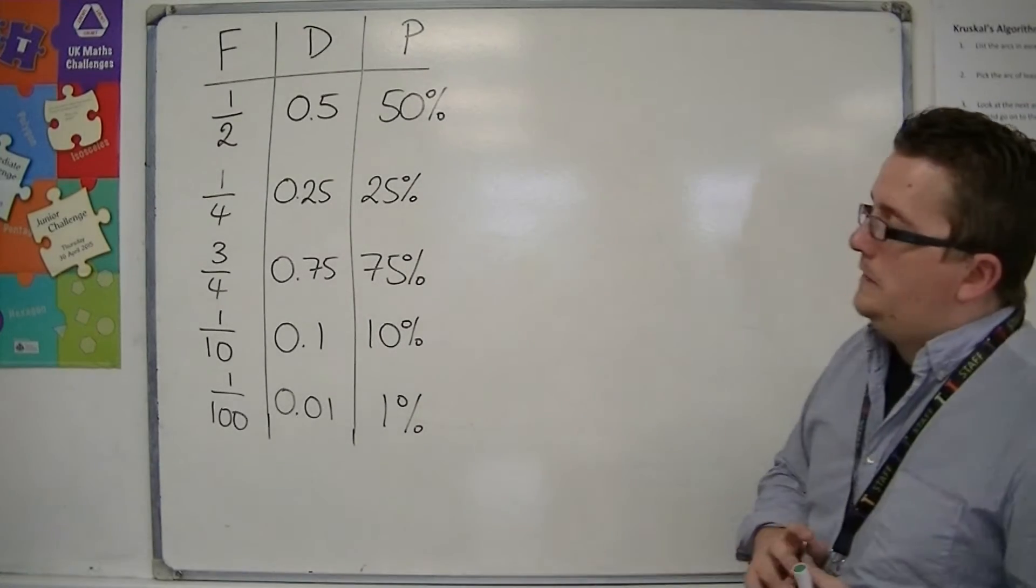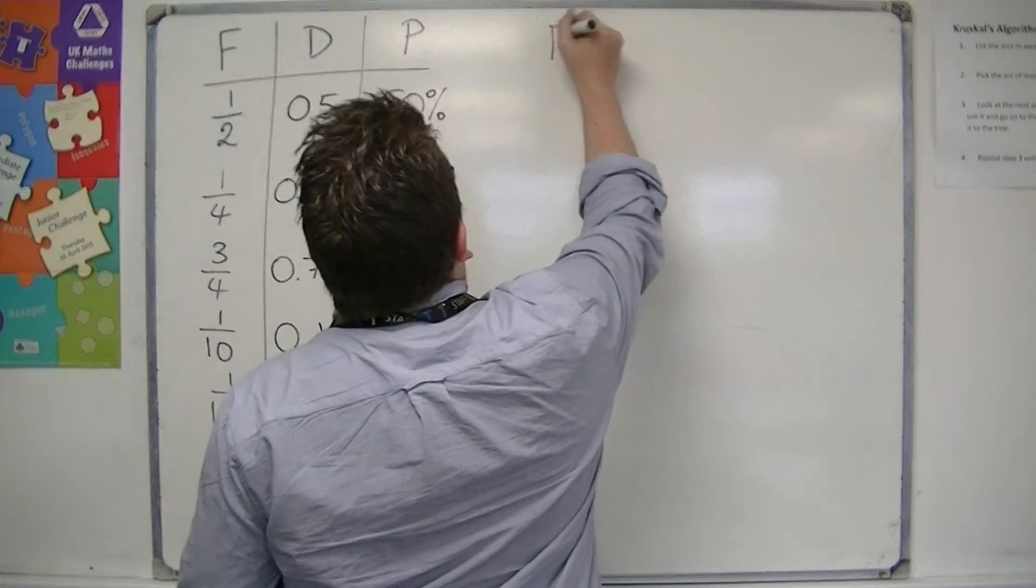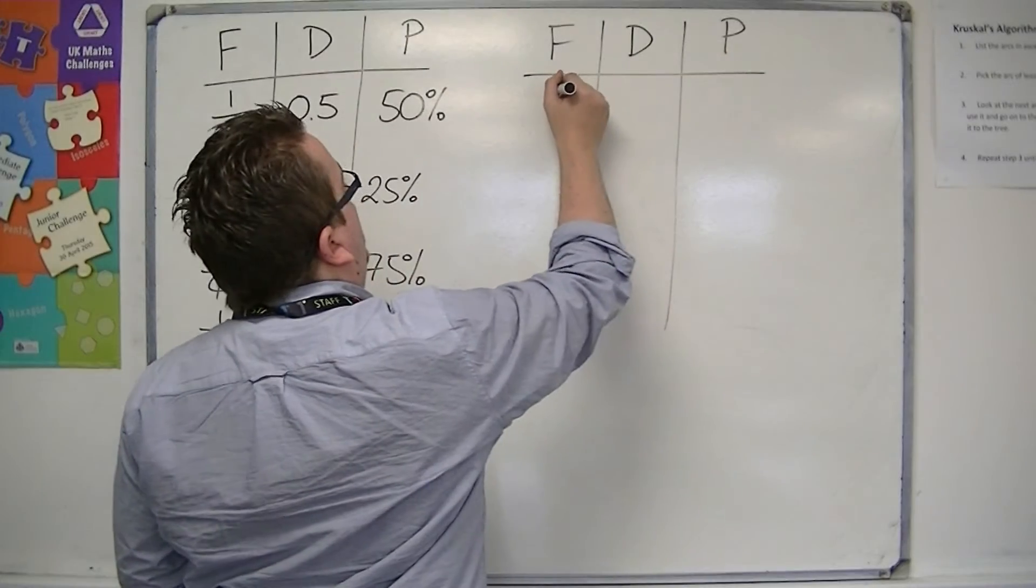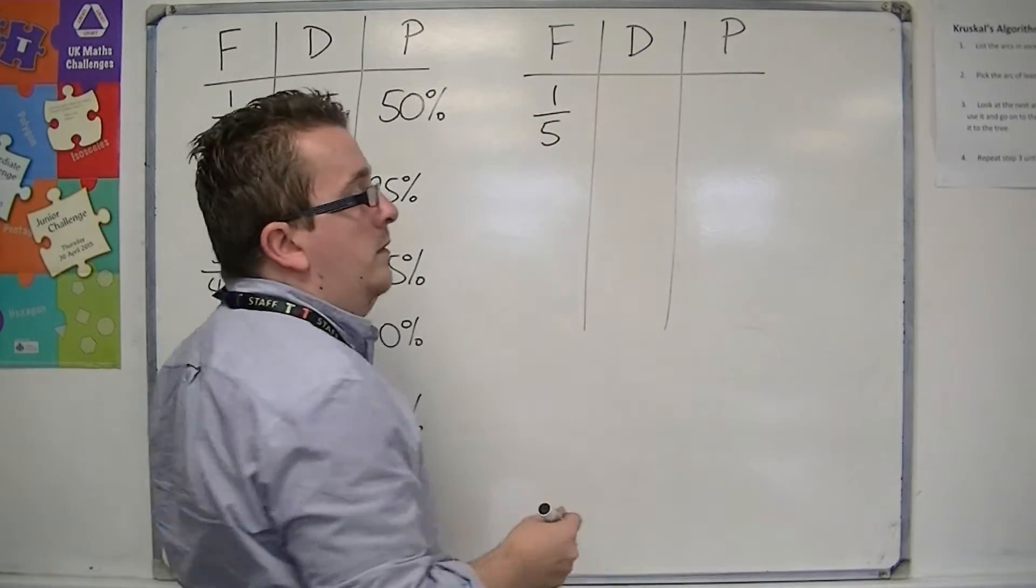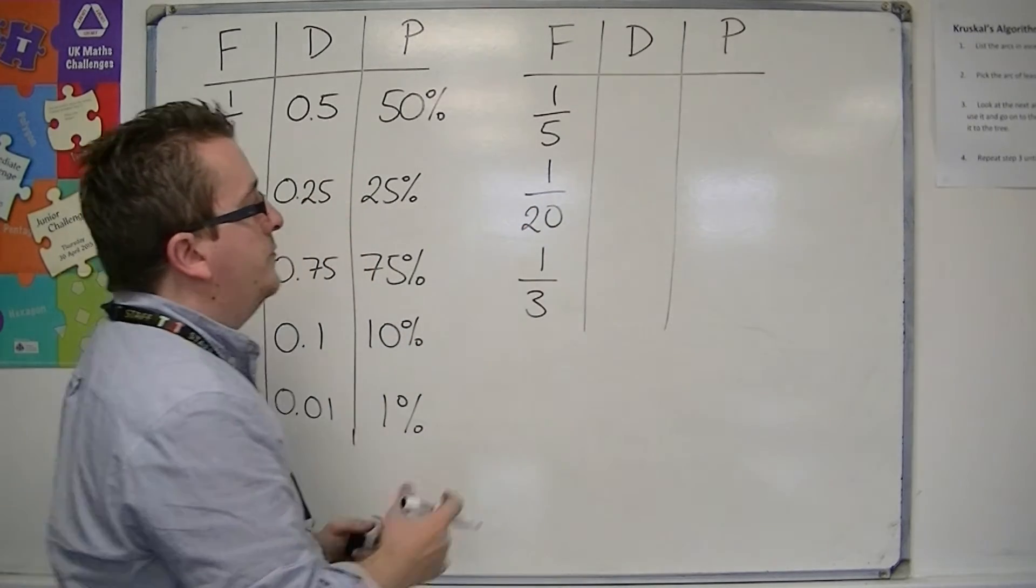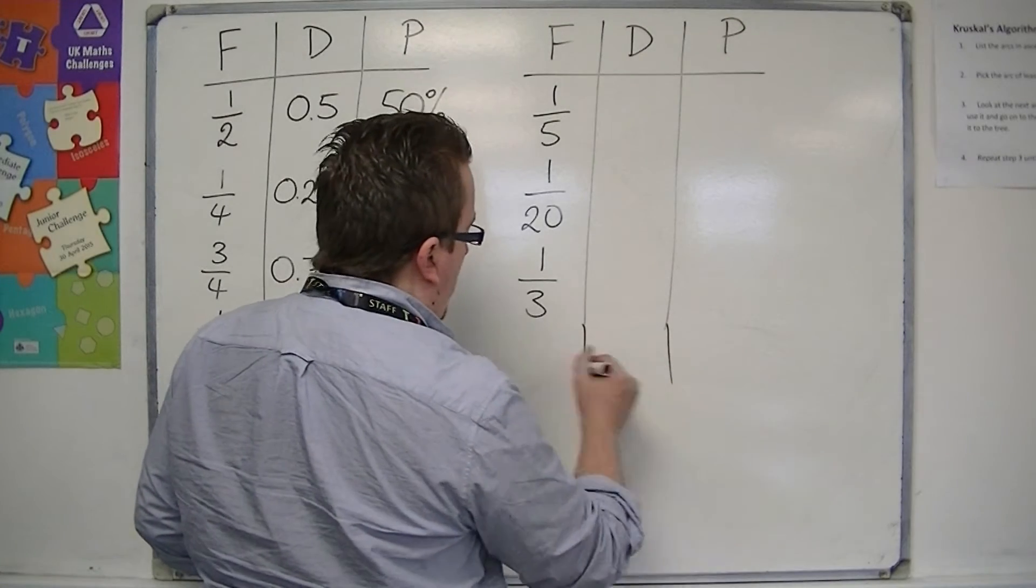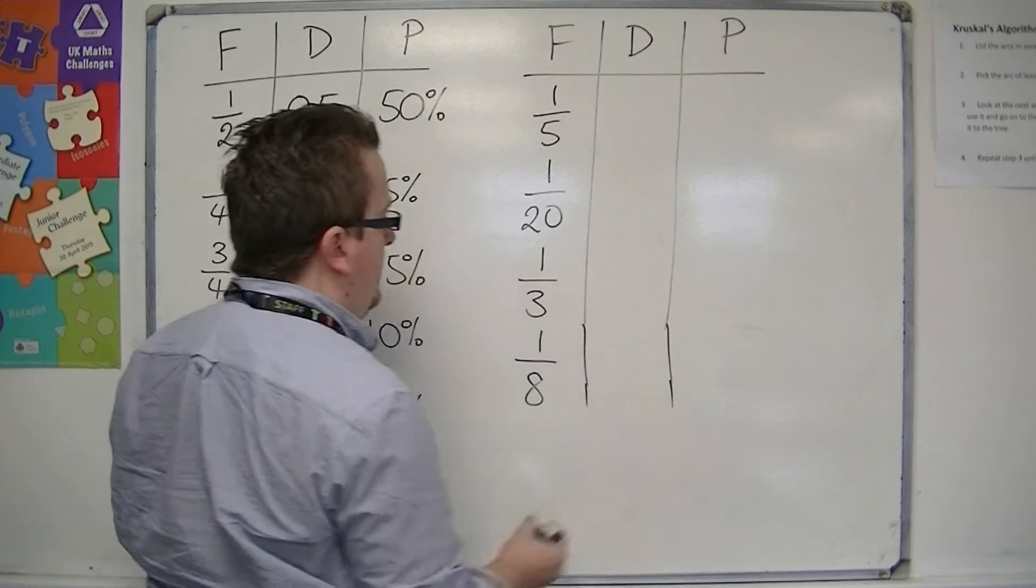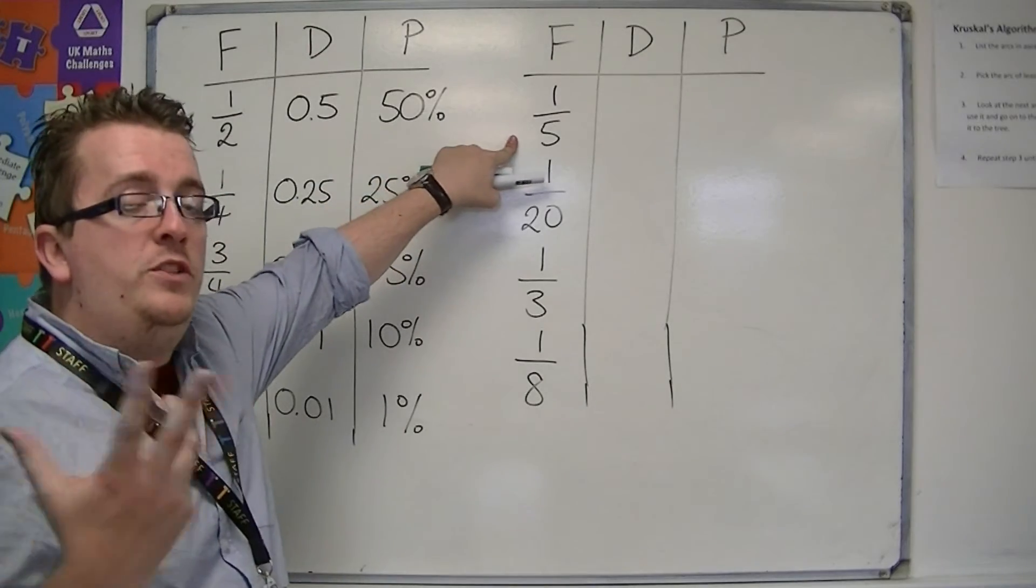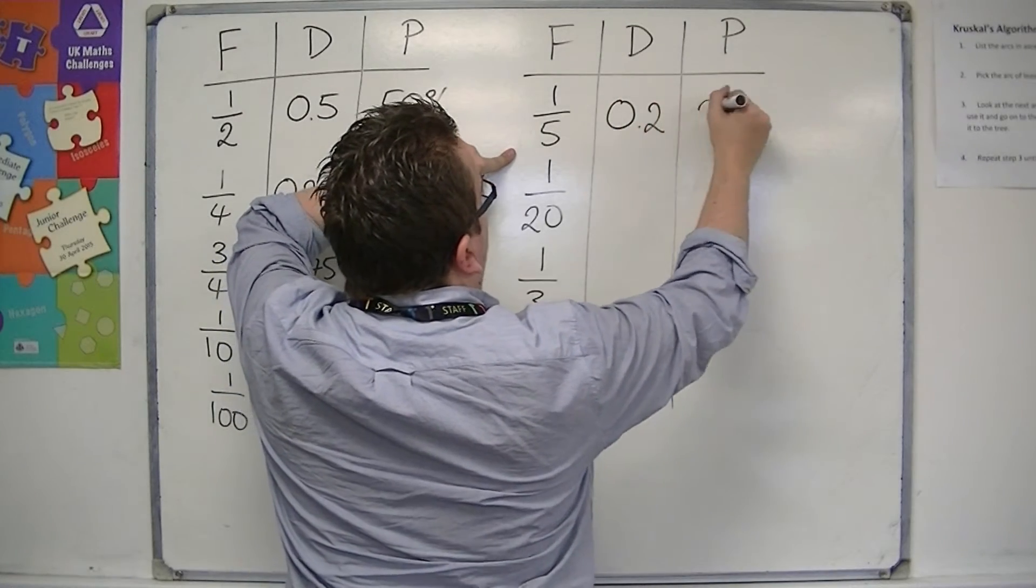There are others that you might meet. So, 1 fifth, things like 1 fifth, or 1 20th, or 1 third, maybe even 1 eighth. So 1 fifth, if you did turn into a decimal, dividing top by bottom, 1 divided by 5 is 0.2, which would be 20%.